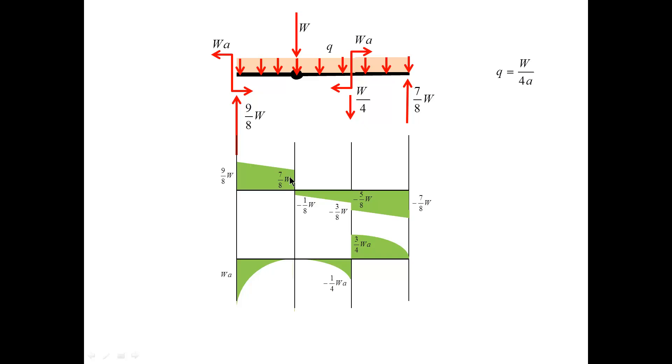Now, I show the jump downwards associated with the force W. Please pay attention. I'm getting the 7 over 8 and 1 over 8 discussed on the previous slide. I continue with the same slope because Q stays fixed. I have another downward jump by W over 4, or 2 W over 8, continue with the same slope, and I arrive at a negative force minus 7 over 8 W, which is of course consistent with the force Q.